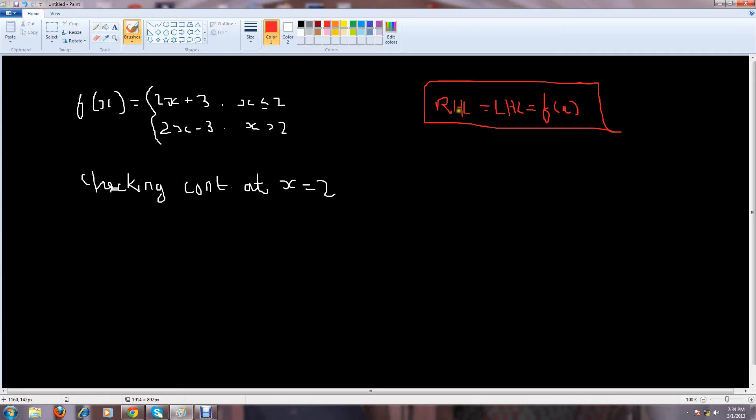So, in this case, RHL is your right-hand limit, and this is your left-hand limit. And this is the function at which you're checking your continuity, where A is in this question, 2.